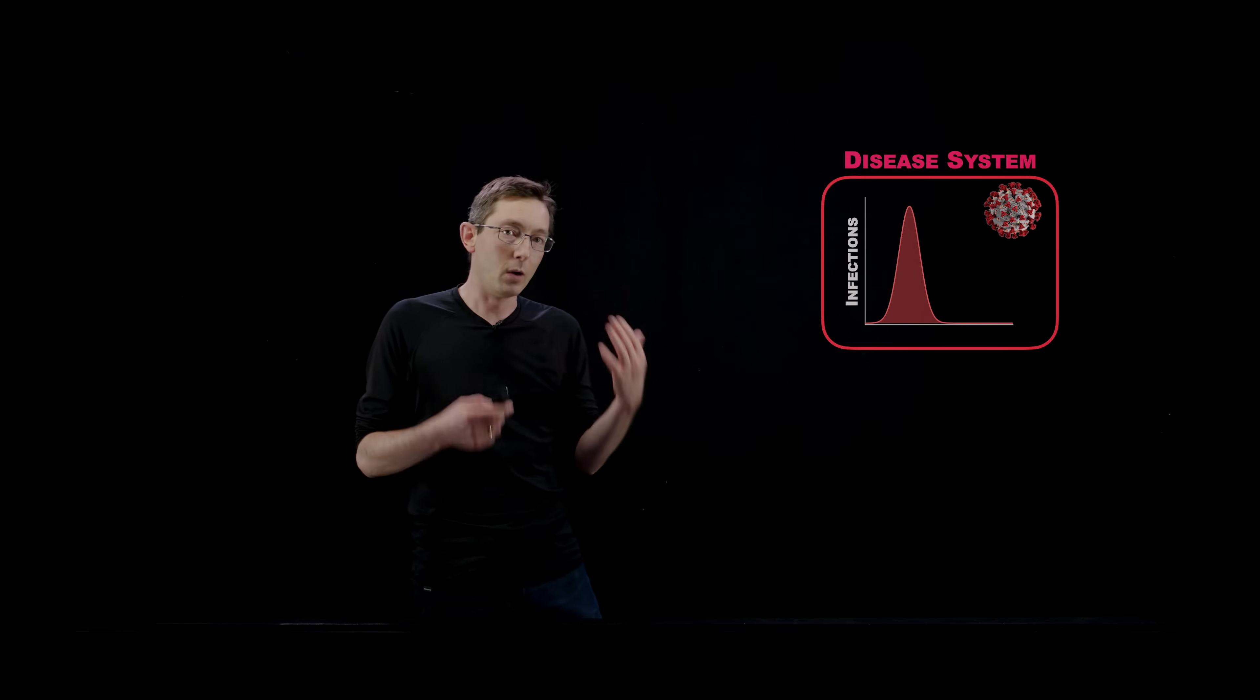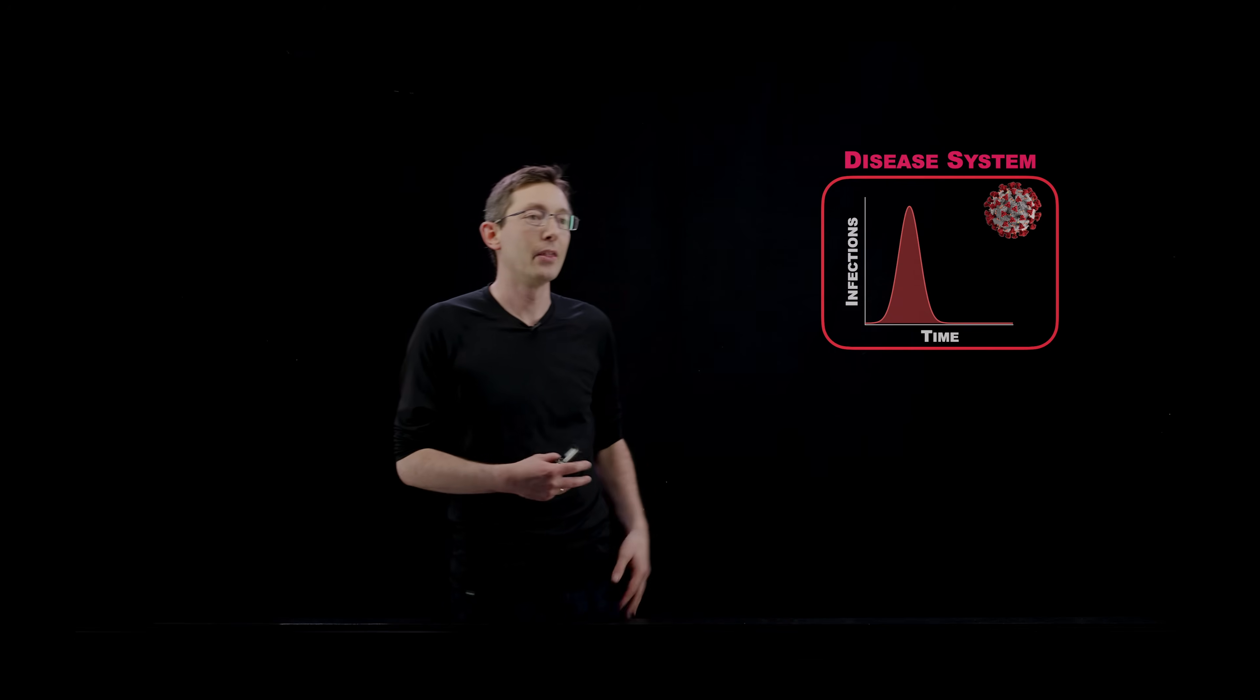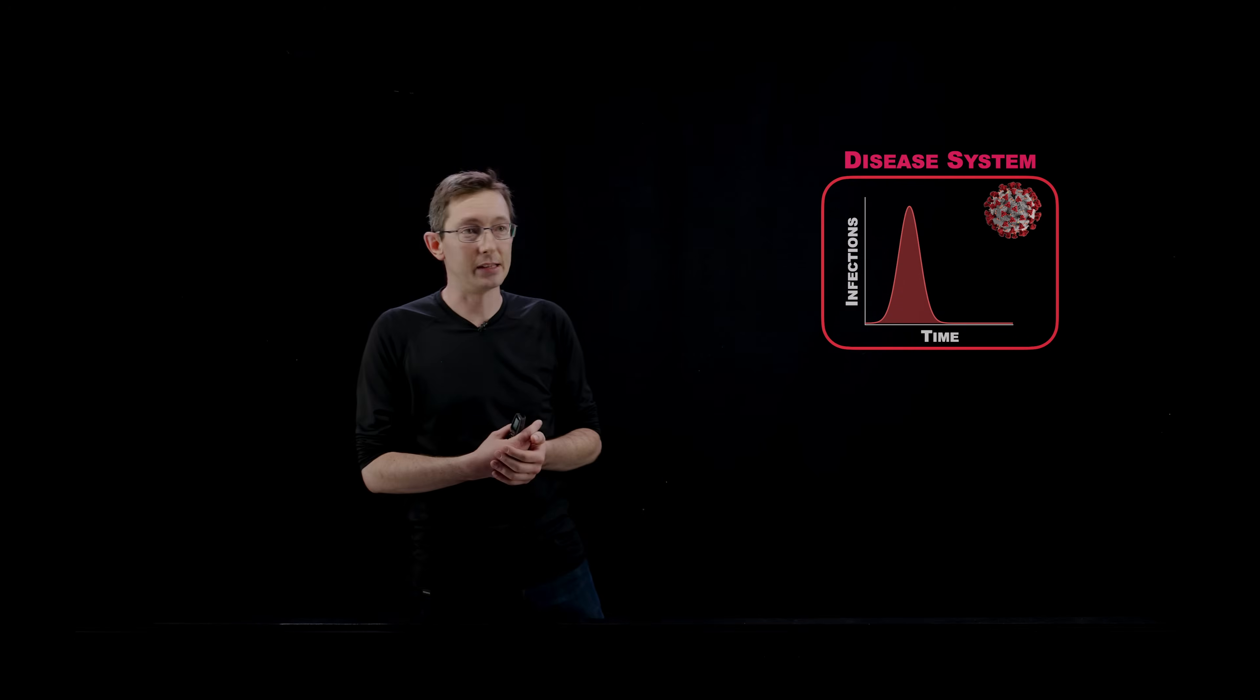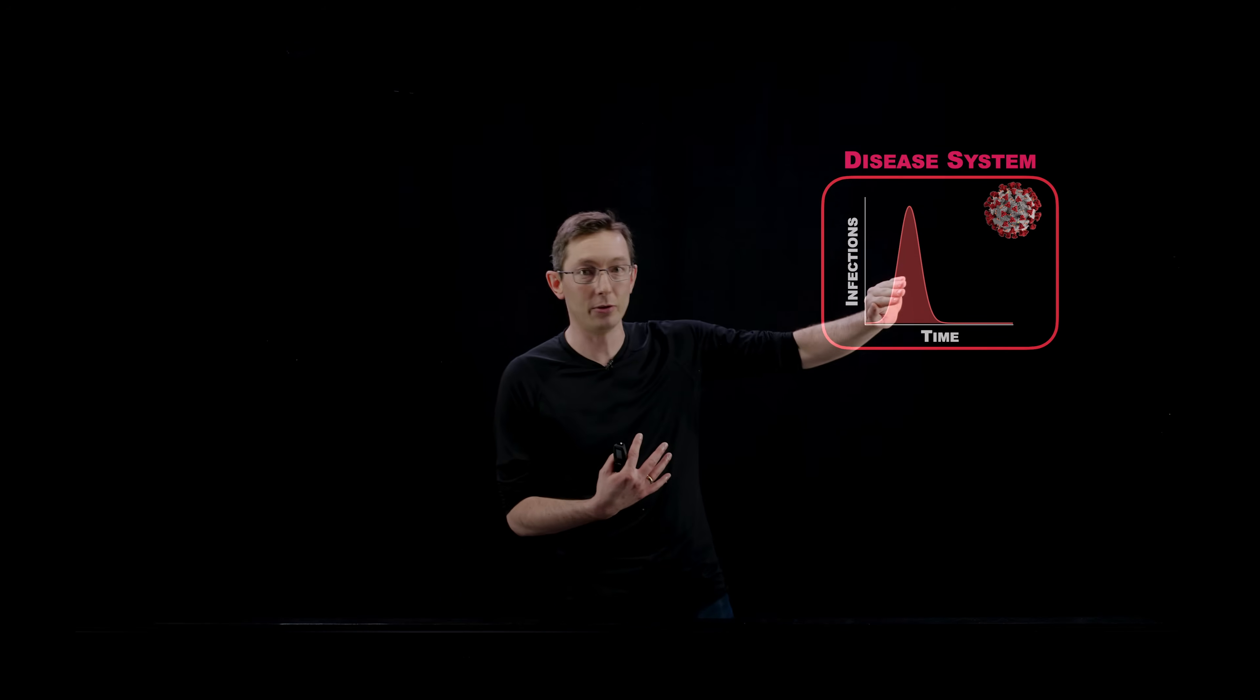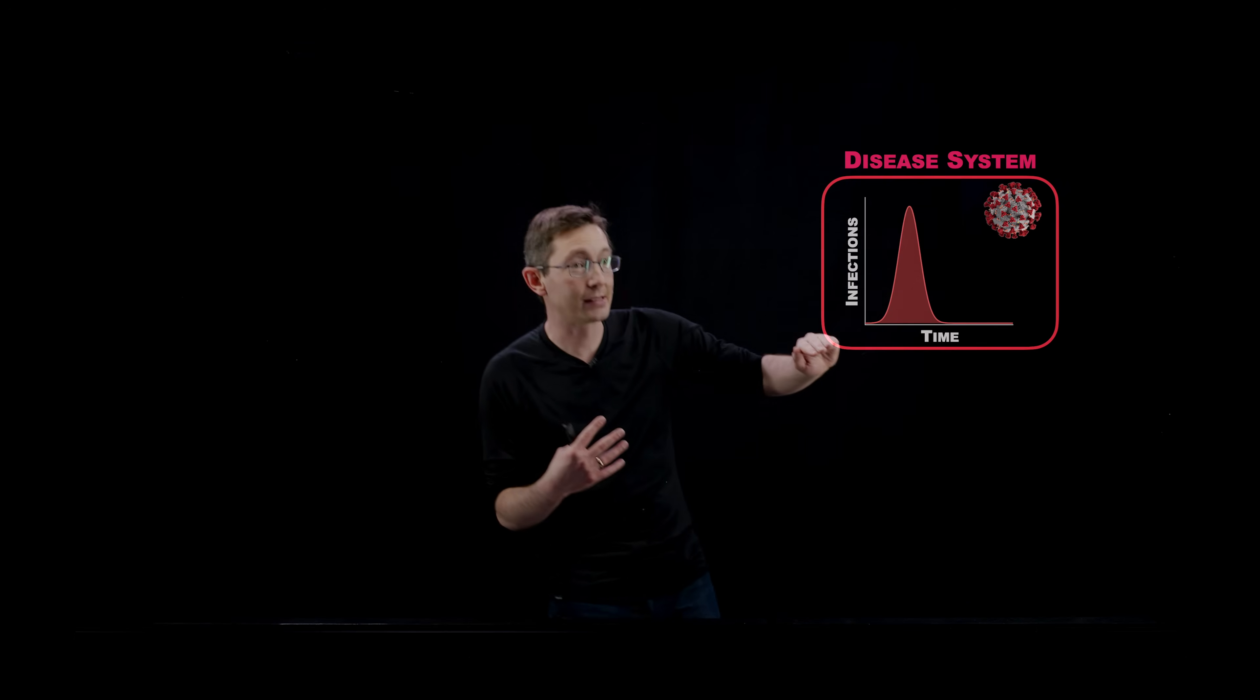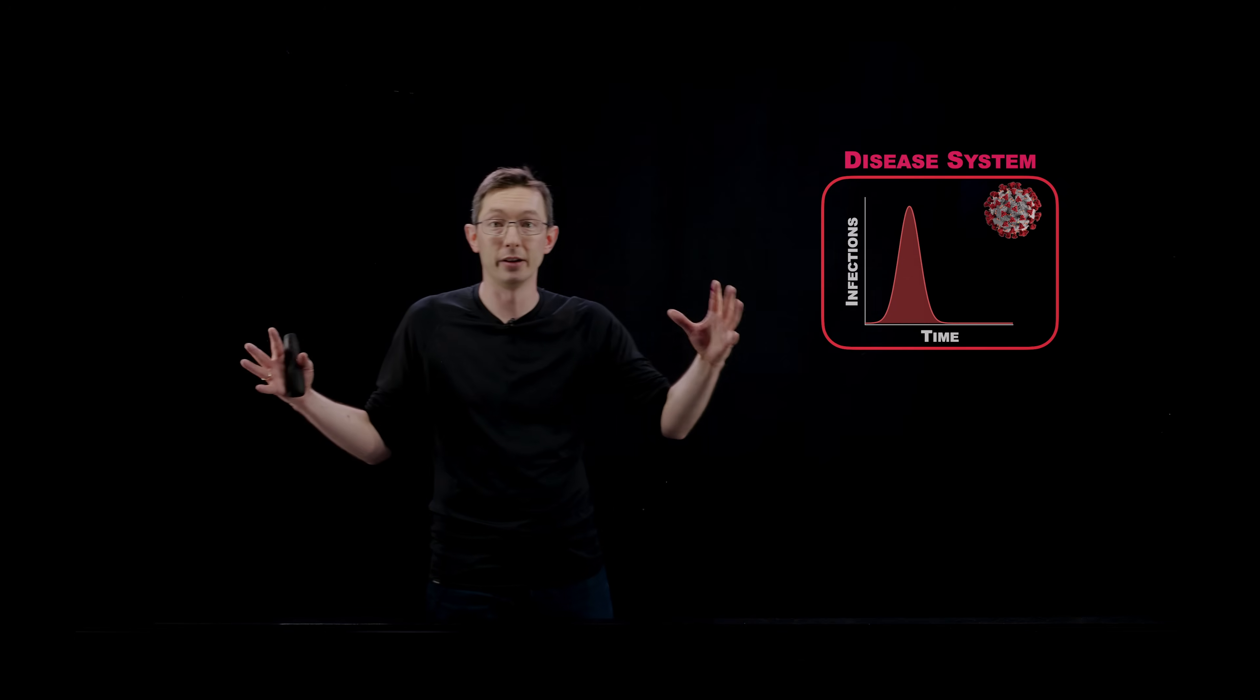But to kind of oversimplify the disease system, one of the things we're really concerned with or one of the outcomes that we want to model is the rate of infections over time. So this is a curve that many of you have seen, this kind of exponential growth. So as a disease enters a population and starts to spread, it starts off spreading exponentially. At some point, that exponential growth ends because there's no more people or there's less people that are susceptible to being reinfected or infected. And then that eventually tapers off.